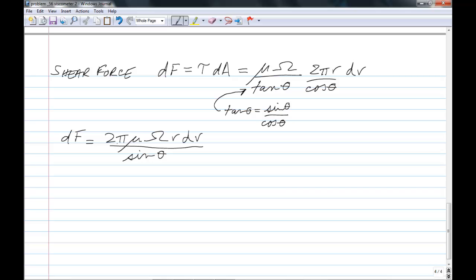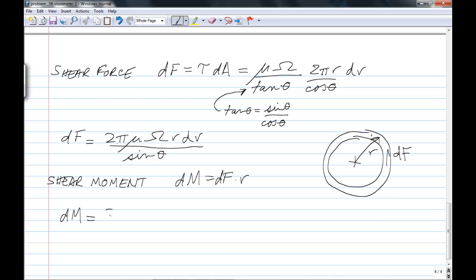Now we can calculate the differential moment on that area. This little differential area is at radius r. And we have a force dF, so the shear moment, if you like, dM equals dF times r. So our differential moment is going to be 2 pi mu omega r squared dr over sin theta.